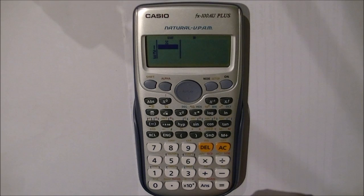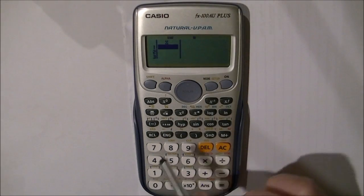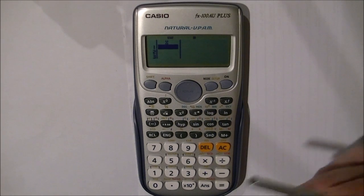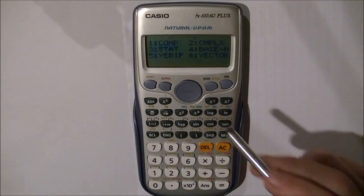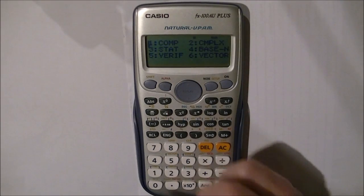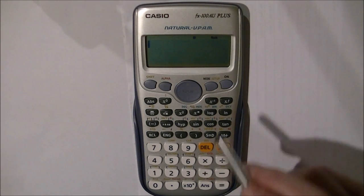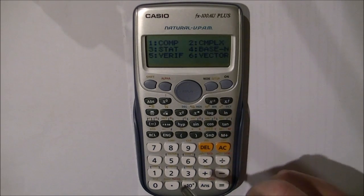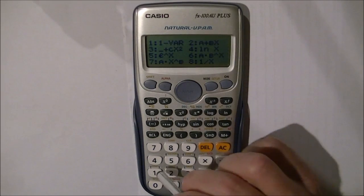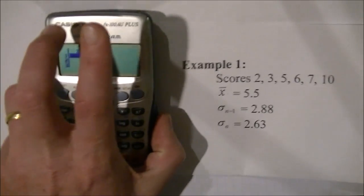This table appears, showing a frequency table where I can enter scores. The table is empty. Whenever you access statistics mode, it clears that table. To exit, press MODE, then COMP to return to computation mode, the standard calculator mode. I'm going back to statistics, so I press MODE, 3 for statistics, and option 1.